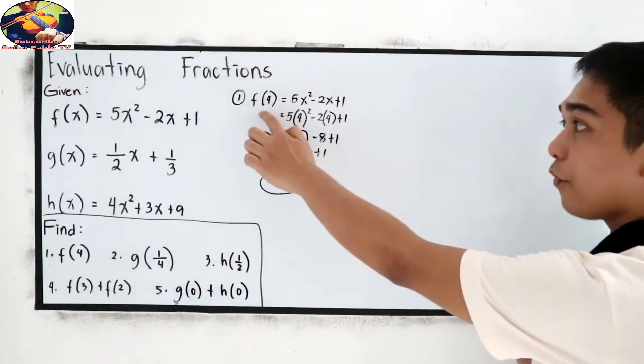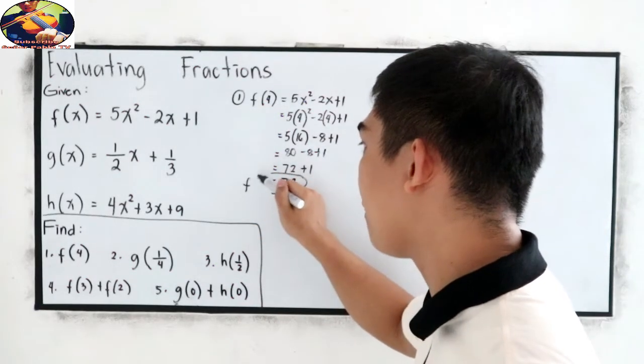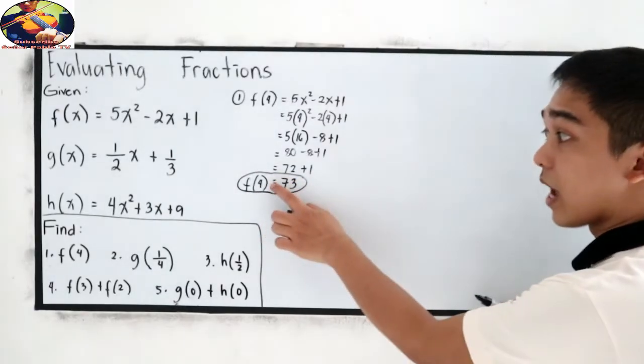Now, f of 4 is 73. If you want to write your answer in this form, f of 4 is equal to 73.